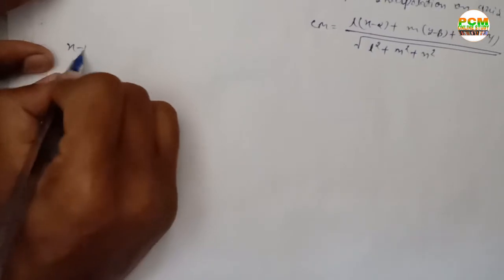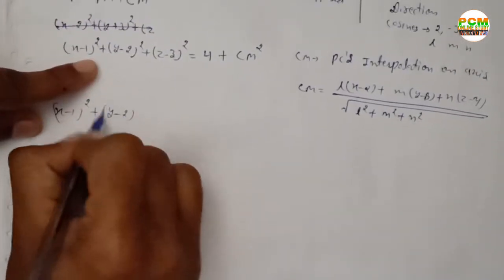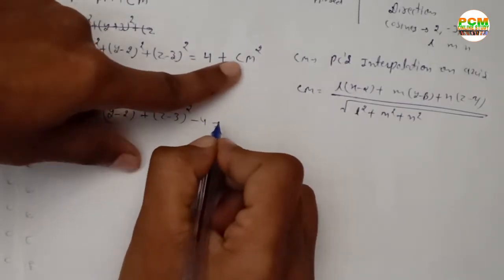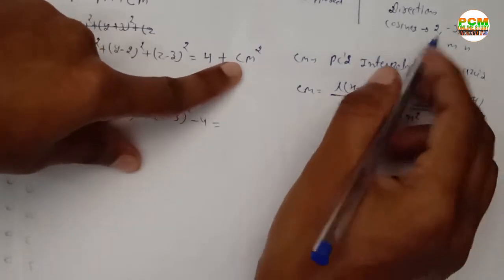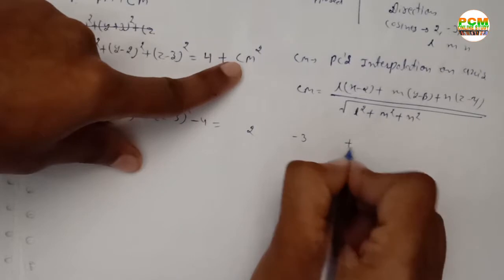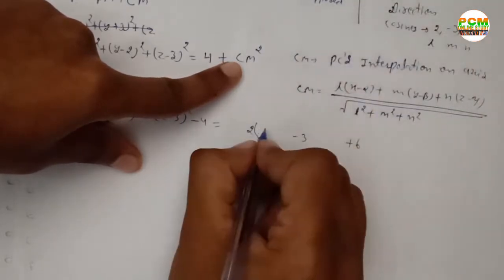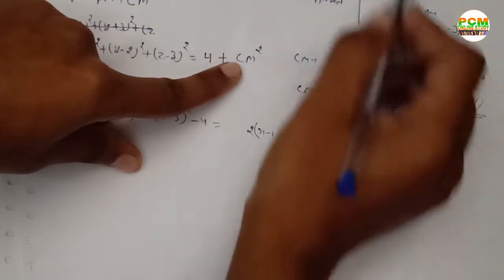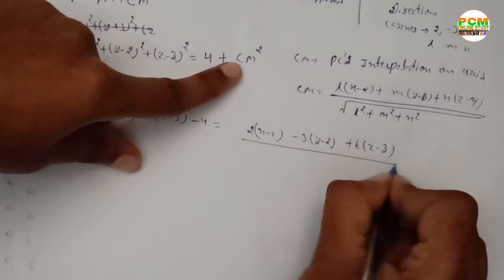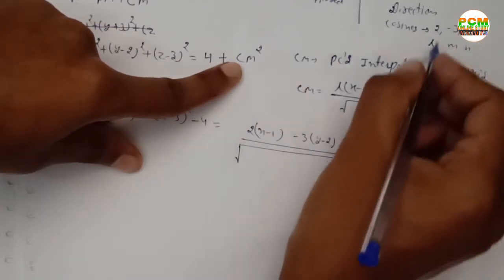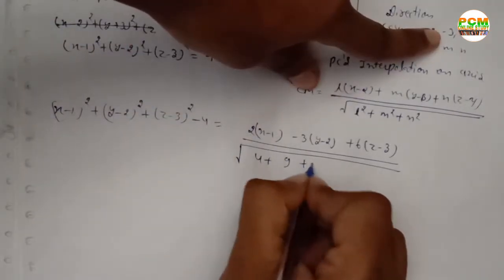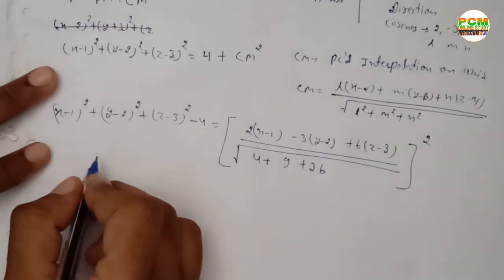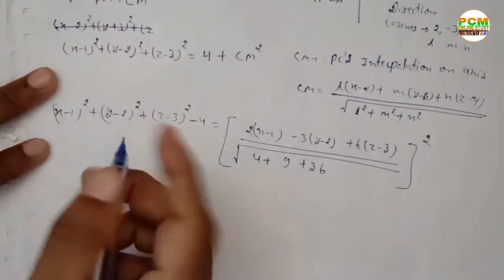So we write: (x-1)² + (y-2)² + (z-3)² - 4 = CM². Substituting l=2, m=-3, n=6 and α=1, β=2, γ=3, we get CM = [2(x-1) + (-3)(y-2) + 6(z-3)] / √(4 + 9 + 36). The denominator becomes √49. Now we expand the brackets using (a-b)² formula.